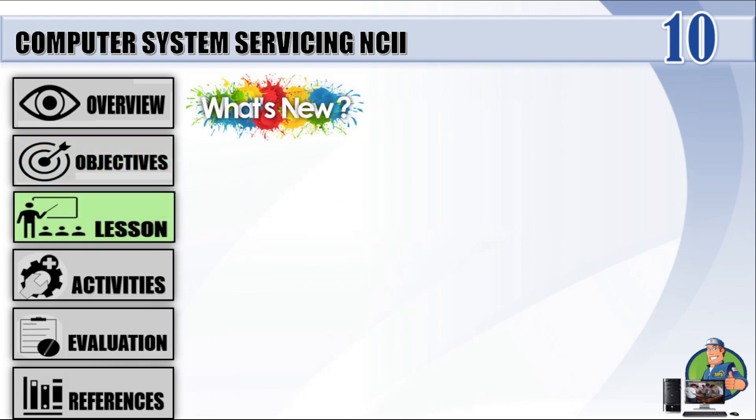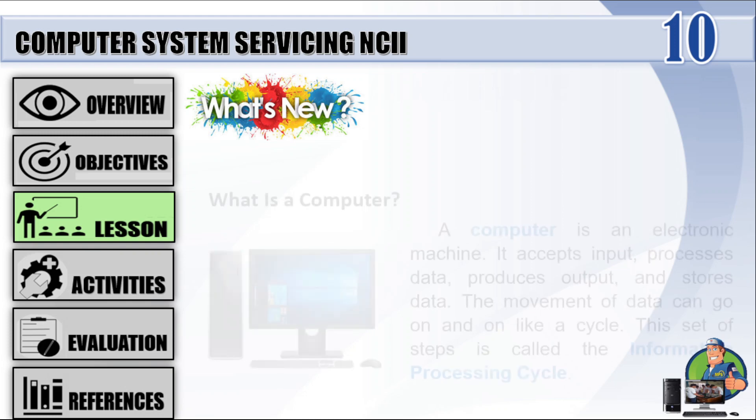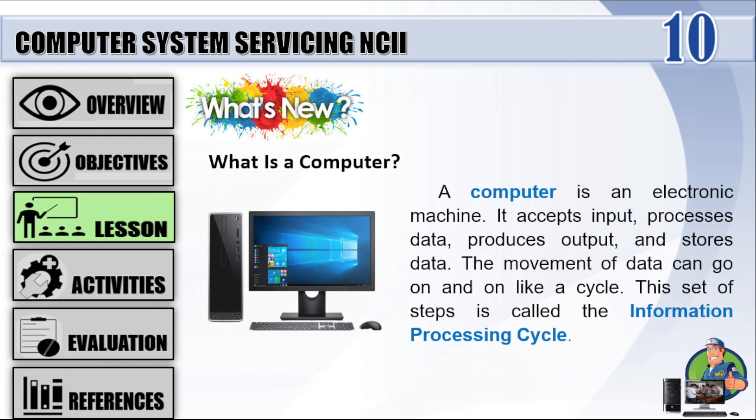What is a computer? A computer is an electronic machine. It accepts input, processes data, produces output, and stores data. The movement of data can go on and on like a cycle. This set of steps is called the Information Processing Cycle.